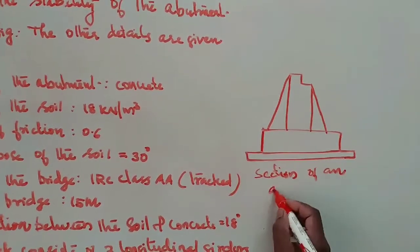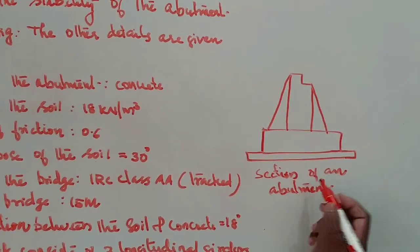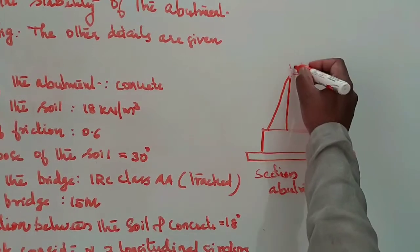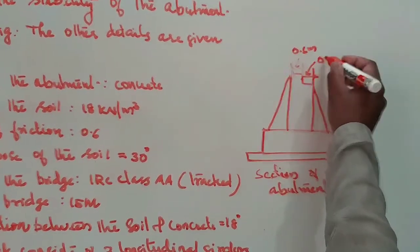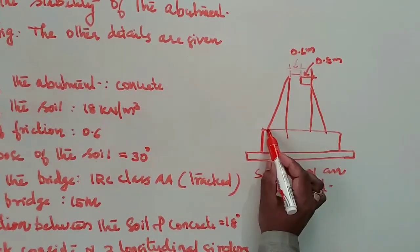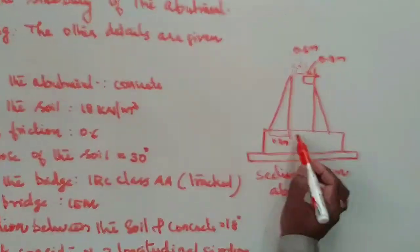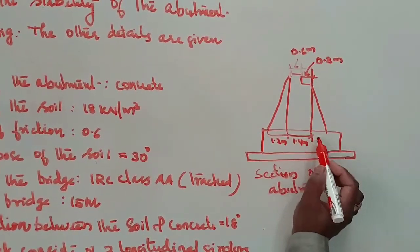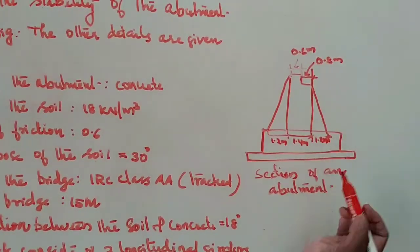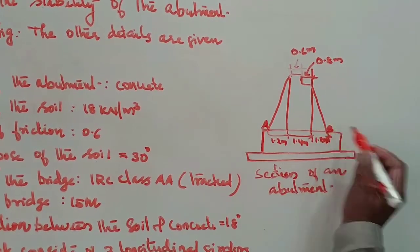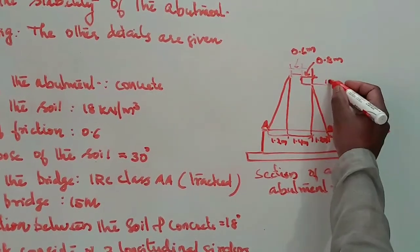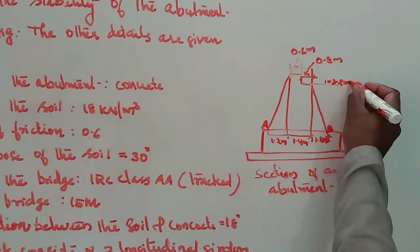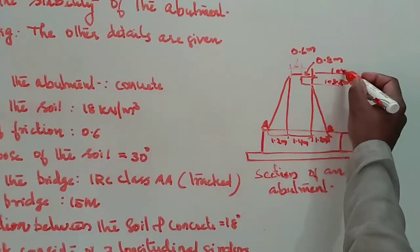Section of the abutment: here it is 0.6 meter and here 0.8 meter, and this distance 1.2 meter, 1.4 meter, and again 1.2 meter. RL here is 100.00 meter, and here 103.2 meter, and above that 105.00 meter.